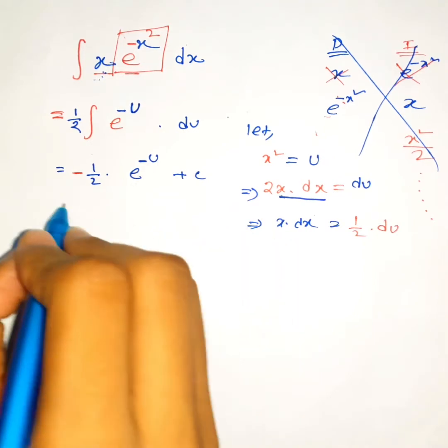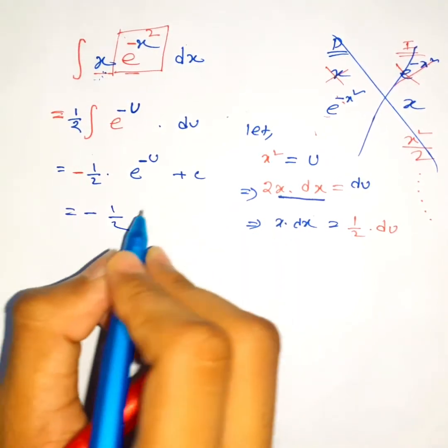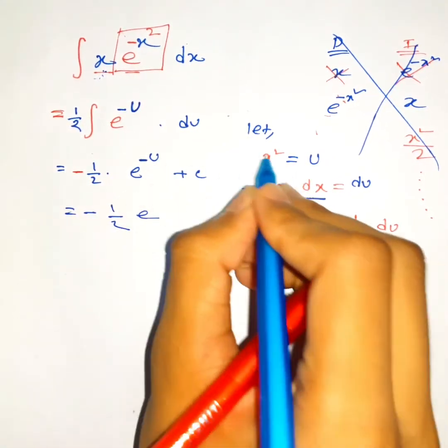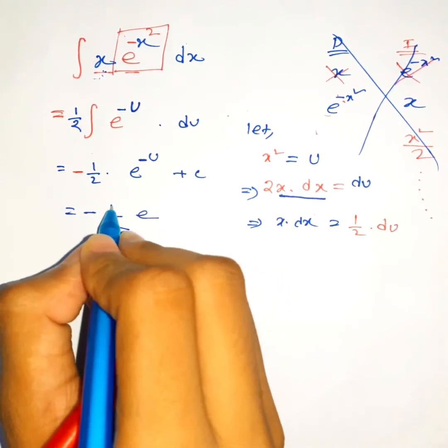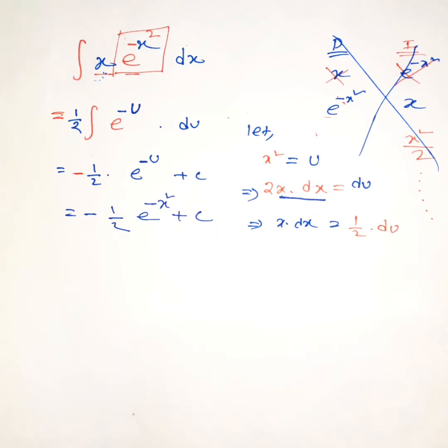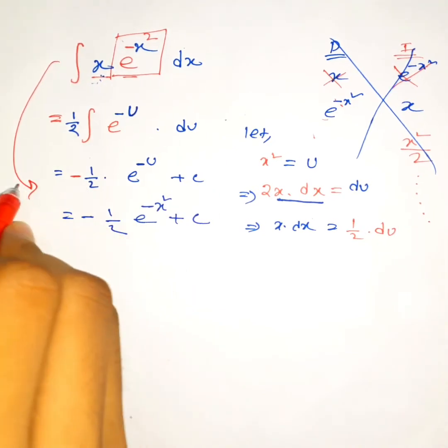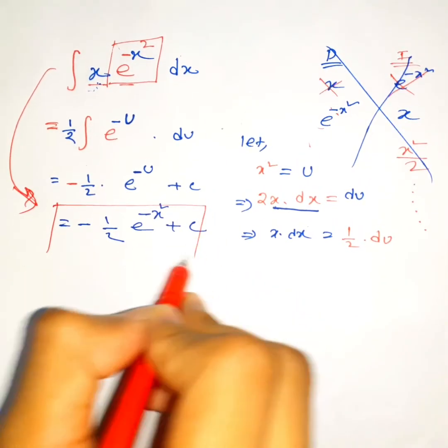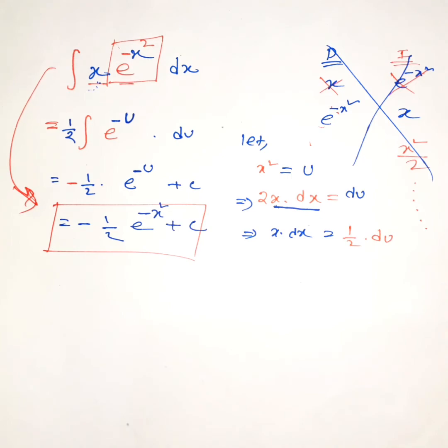Now finally, let's substitute this u with x squared. This is equal to negative half e to the negative x squared plus c. And that's the answer. So that's it guys, thanks a lot for watching, and if you are new to this channel don't forget to subscribe.